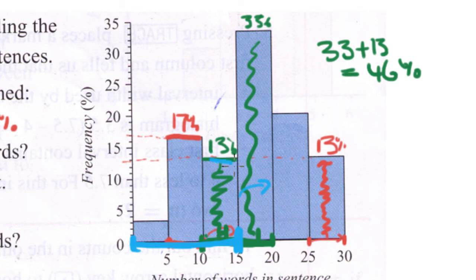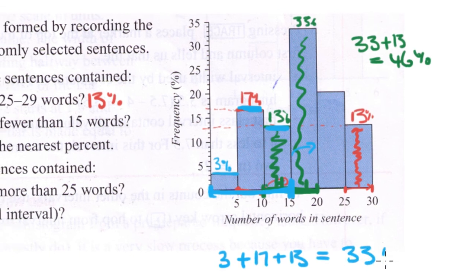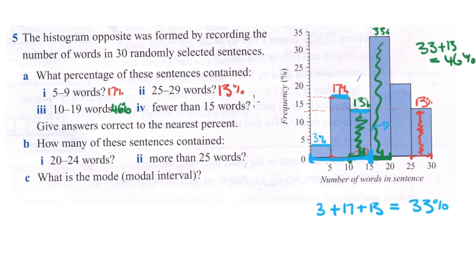We get this 13% plus this 17% plus whatever the height of this bar is here, which we worked out is 3%. So for this one we have 3 plus 17 plus 13, which is 33. Our answer is 33% for this one.